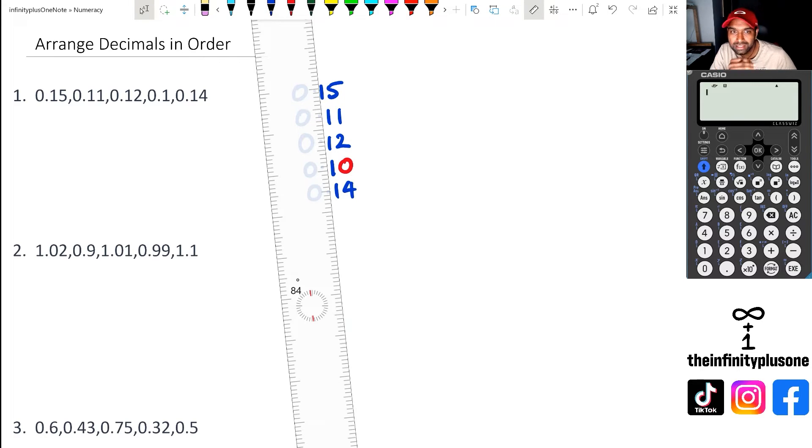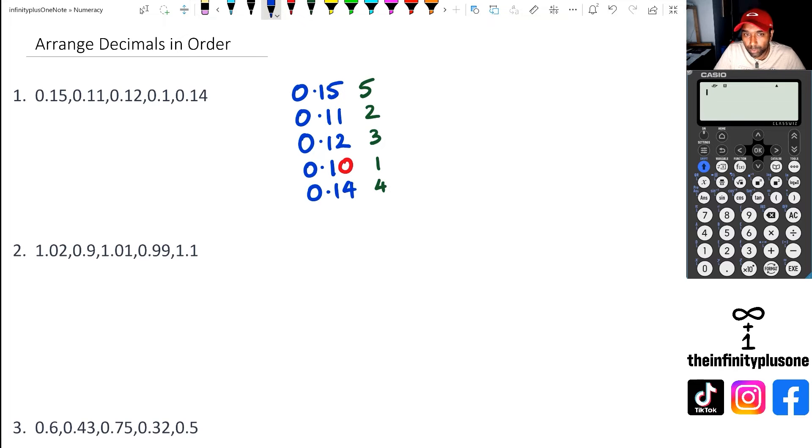If I look at these numbers, I'm not looking at the decimal but just looking at the numbers as numbers. I've got 15, 11, 12, 10, and 14, and I know how to put this in order: first number, second number, third, fourth, and fifth number.